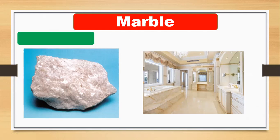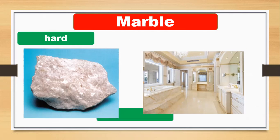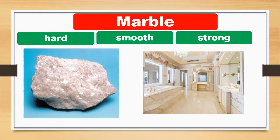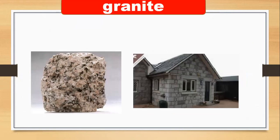Let's talk about marble. Marble is a kind of rock and we can use it in buildings to make good buildings. Marble is very hard, very smooth, and it looks beautiful in our homes. Marble is also strong, so we can use marble in buildings because it is hard, smooth, and strong.